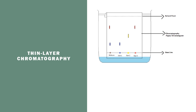Thin layer chromatography works almost the same as paper chromatography. The difference is you'll have a plate — sometimes glass, sometimes a polymer. There'll be a coating on top making a very thin layer, which is why it's called thin layer chromatography. This thin layer has some kind of material on it that the substance can move through.